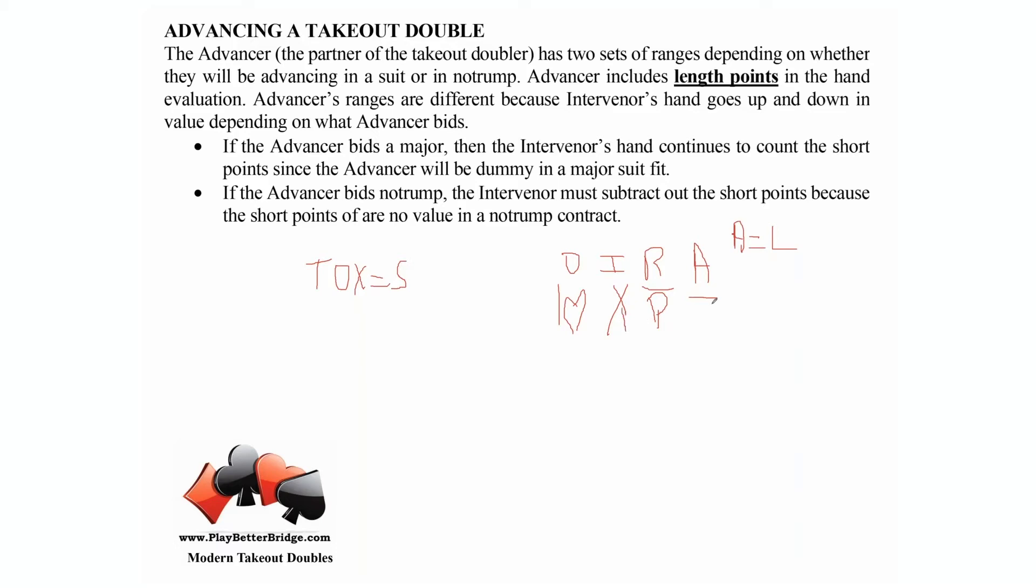We're going to split things into two different compartments as advancer because we have two different point ranges. If advancer is coming in with a suit contract, they've looked at their hand and they're going to bid a suit.